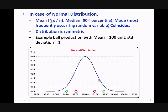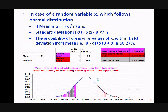For a random variable following normal distribution with mean mu and standard deviation sigma, the area between mu minus sigma to mu plus sigma is 68.27%. In the ball production example with mean 100 mm and standard deviation 1 mm, mu minus 1 sigma is 99 mm and mu plus 1 sigma is 101 mm. The total population lying between these two ranges will be 68.26%, meaning if we produce 100,000 balls, about 68,260 balls will have dimensions between 99 mm and 101 mm.